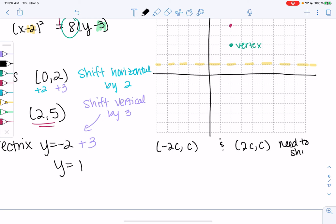So let's find them and then we'll shift them. c was 2. So negative 2 times 2 is negative 4 and 2. Then positive 4 and 2. So these would be the case if the vertex were (0,0).